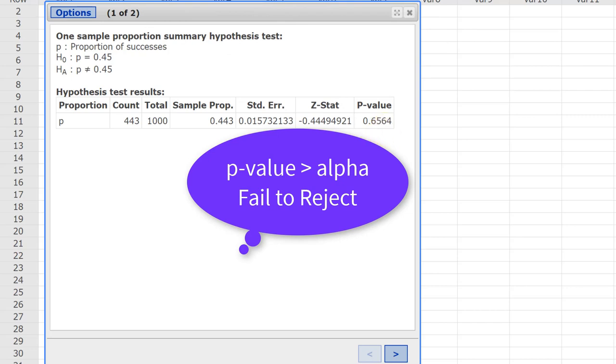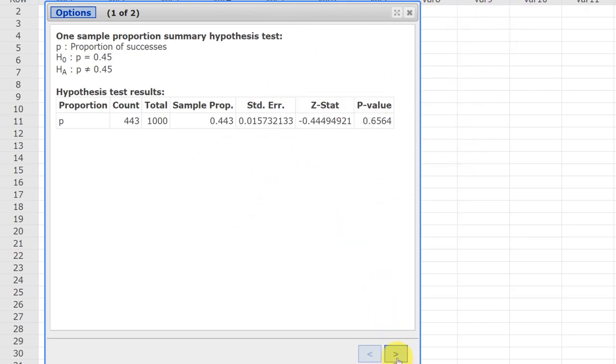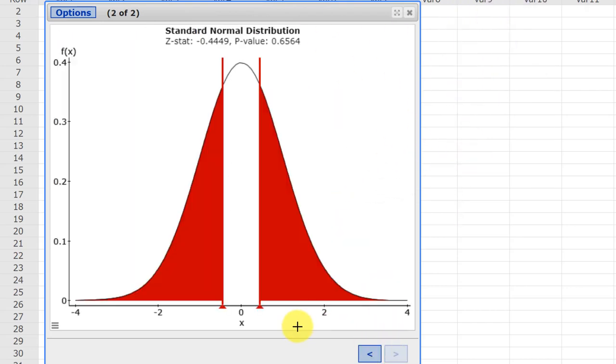Let's look at the graph. Here is the graph. It gives us the standard test statistic minus 0.449 and that's right there. And of course we check on a two-tailed test, we divide the probability in the two tails. So this is half of 0.6564 and this other red area is the other half of 0.6564.